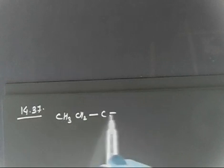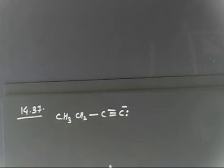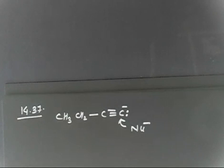Let us discuss a few problems. In this case, acetylide ion can act as a nucleophile. We have discussed this in class. Let us say we have acetylide ion CH3CH2C≡C with a minus charge — a lone pair — and this is why it has a minus charge. This C minus, that is a carbanion, can act as a nucleophile.